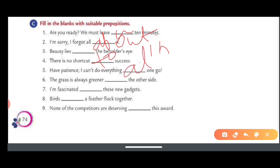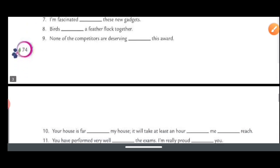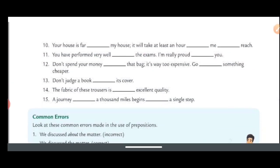The grass is always greener on the other side. I am fascinated by new gadgets. Birds of a feather flock together. None of the competitors are deserving of this award. So guys, this completes up to nine. Ten to fifteen is yours for self-practice. Grammar is very important when you are going to practice by yourself. So you have to do 10 to 15 by yourself. If there is any doubt, mention in the comment box, we will discuss later on.